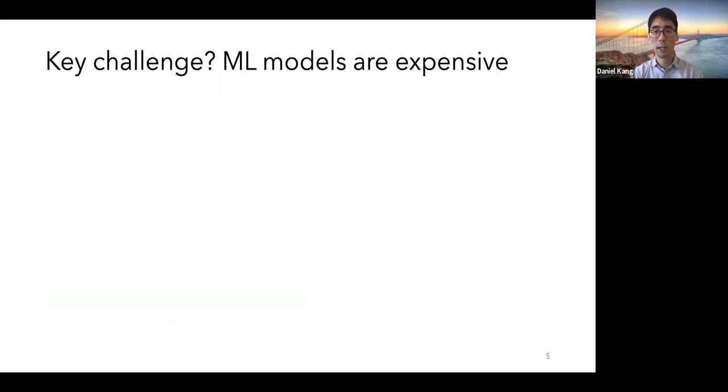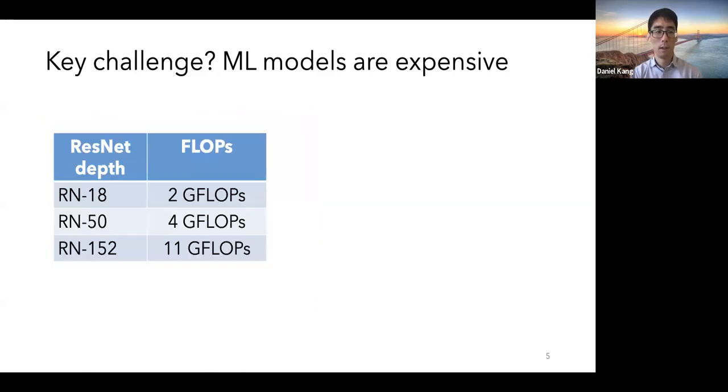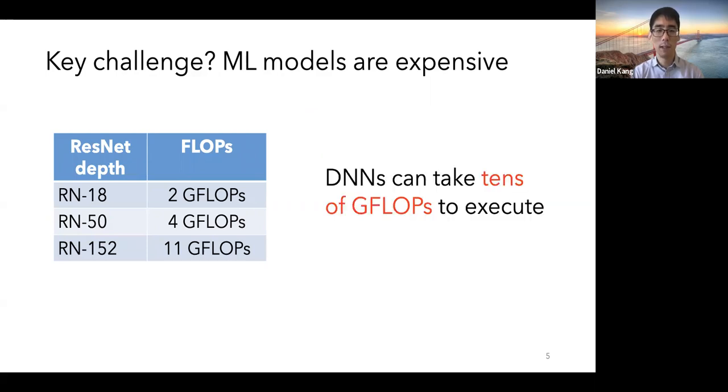Historically, a key challenge for executing visual analytics queries with deep learning is that these ML models are expensive. For example, here I'm showing a different set of ResNets and the amount of flops it takes to execute these ResNets. As we can see, these DNNs can take up to tens of gigaflops to execute, which is substantially more expensive than standard query processing techniques.